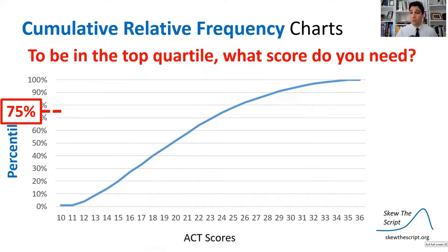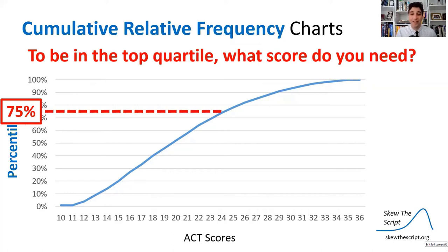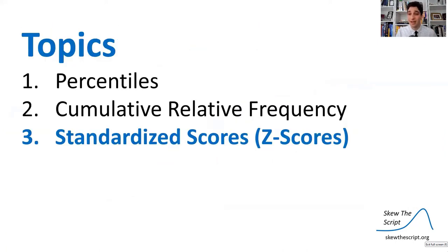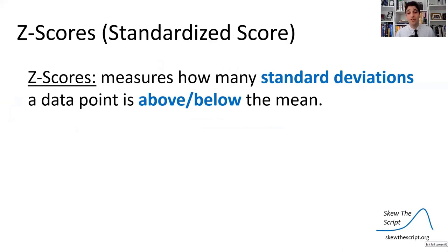To be in the top quartile of ACT test takers, we go to the 75th percentile (Q3) on the y-axis, draw a horizontal line to the curve, then read down to the x-axis. That corresponds to a score of 24. So you need a score of 24 or higher to be in the top quartile of ACT test takers, and 24 is also Q3.